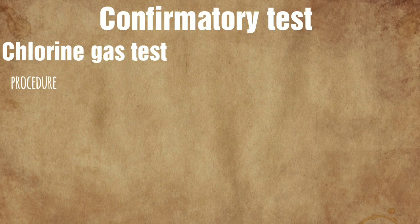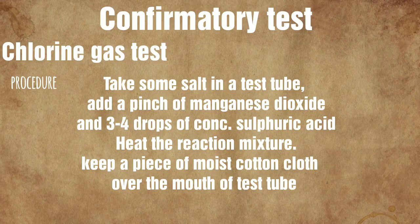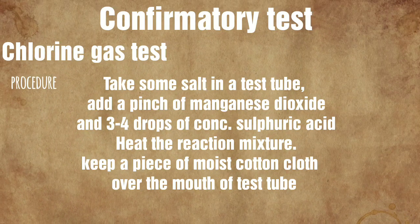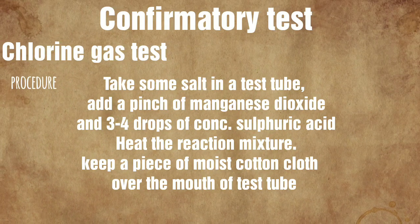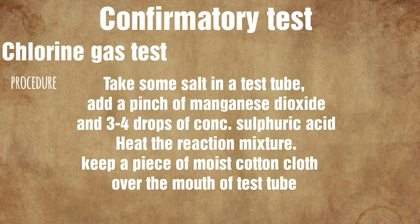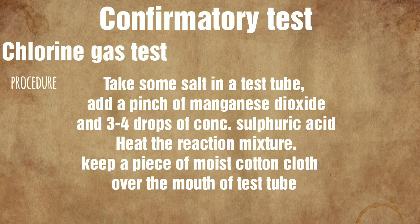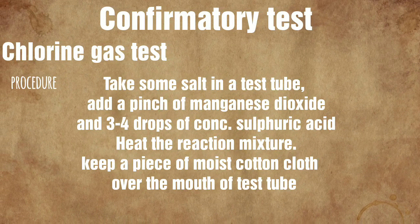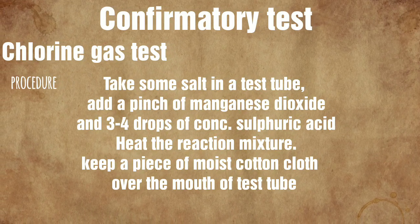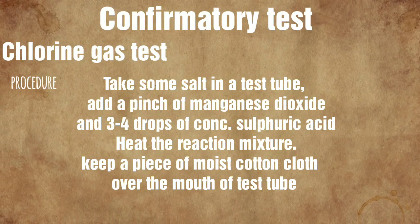Chloride reacts with concentrated sulfuric acid to produce hydrogen chloride gas, which reacts with ammonia to produce ammonium chloride — the white fumes. The chlorine gas test involves heating a pinch of salt, manganese dioxide, and concentrated sulfuric acid in a test tube, and keeping a piece of cloth over the mouth of the test tube.